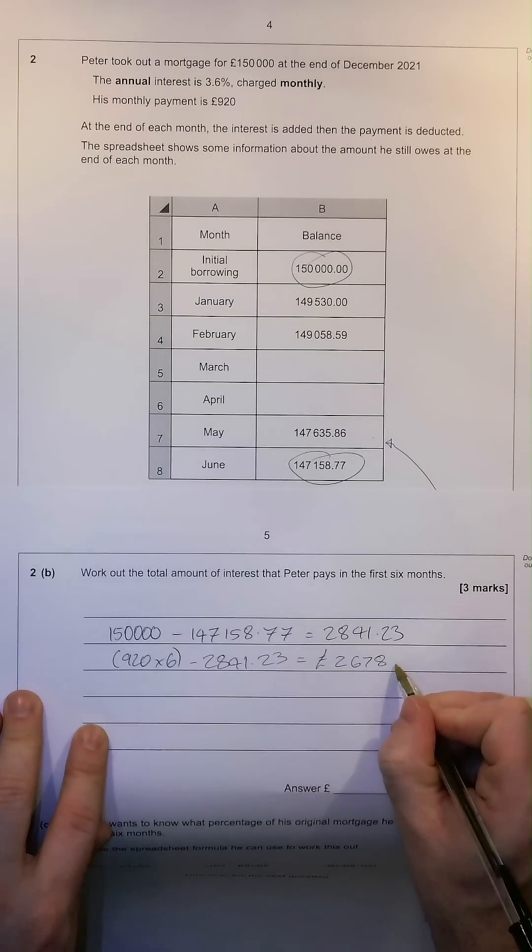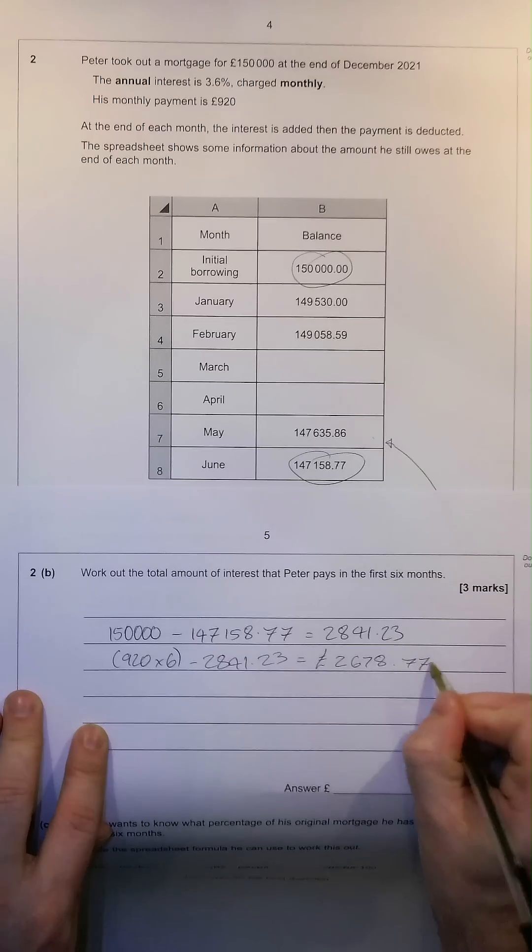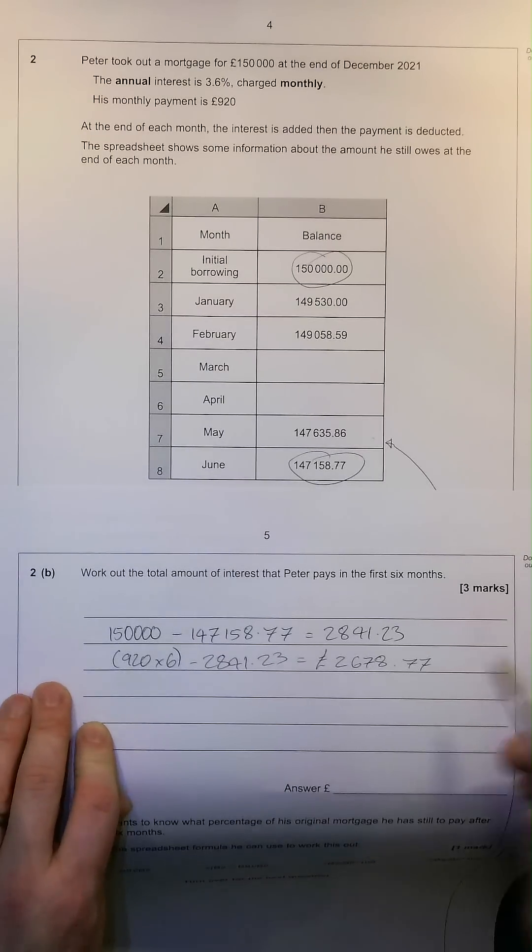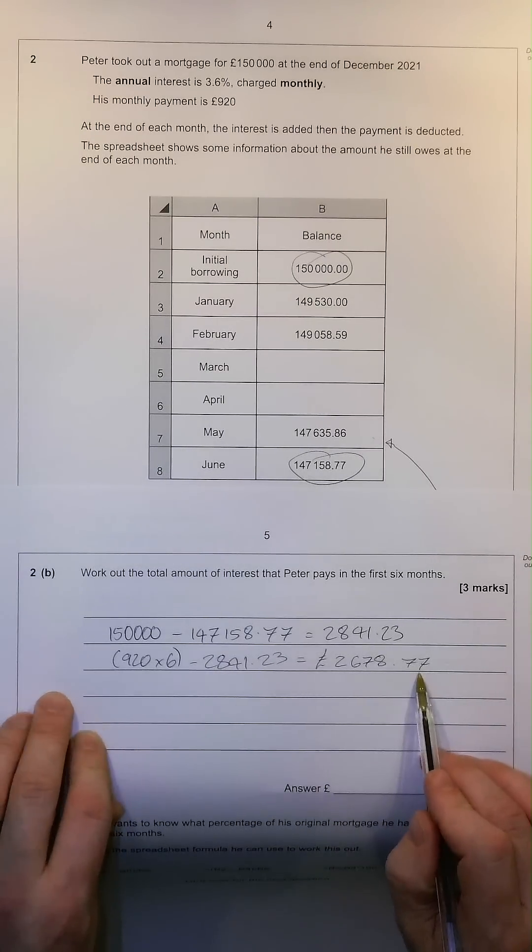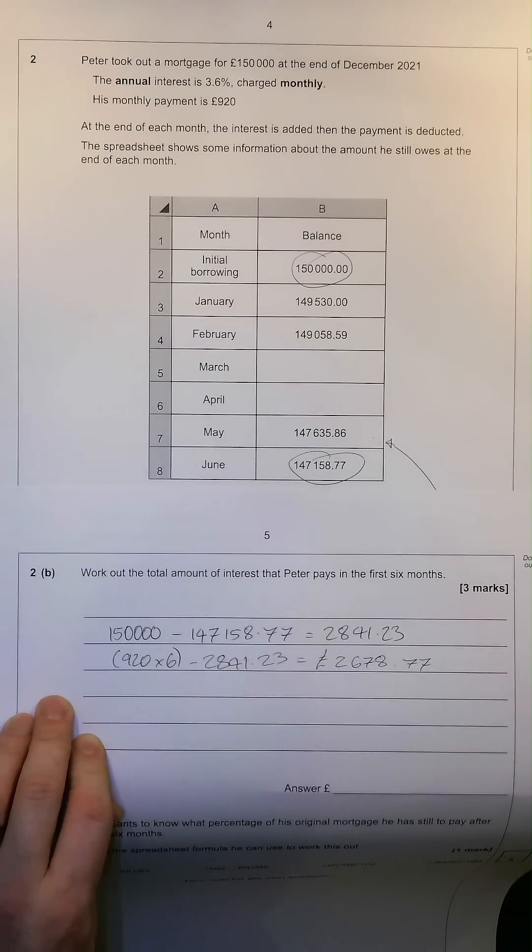The answer? £2,678.77. And that is the amount of interest that he's paid when we take away his monthly repayments.